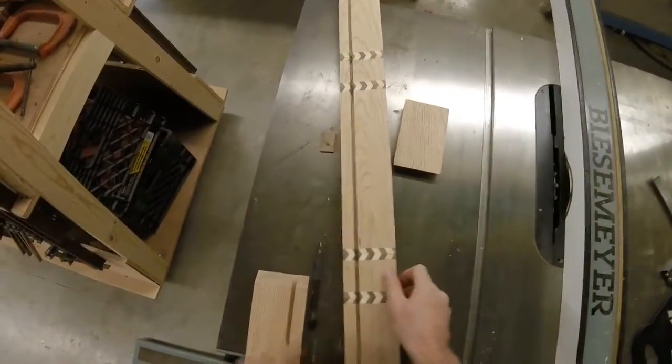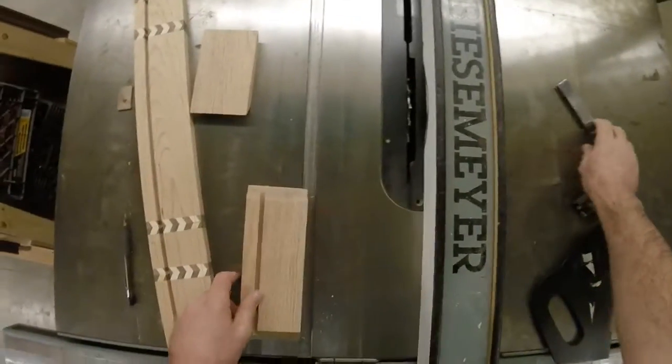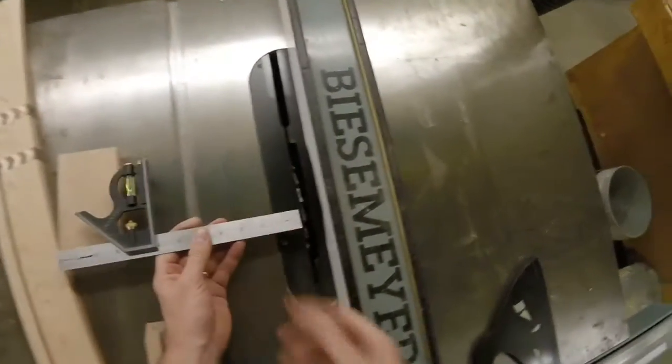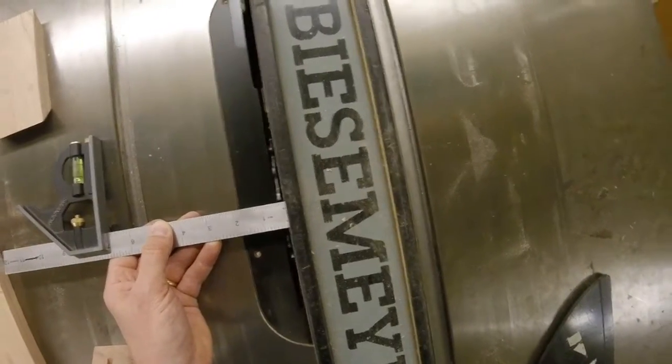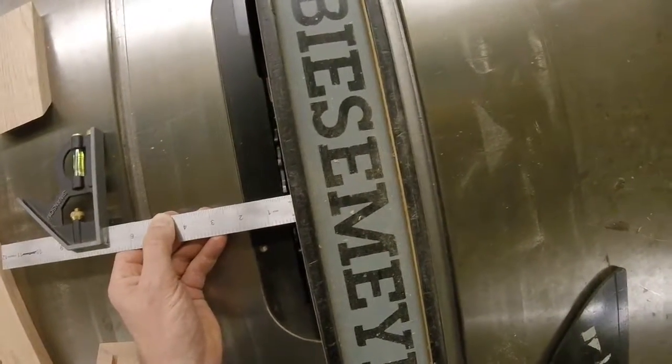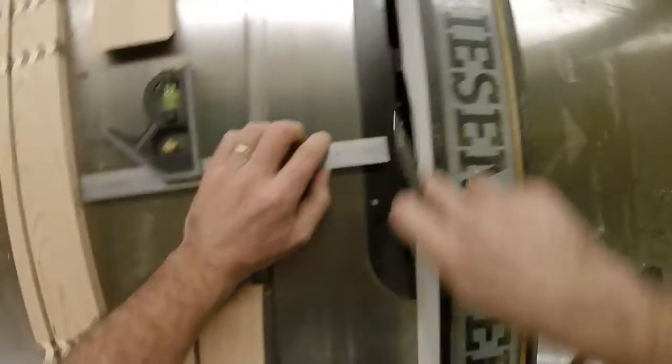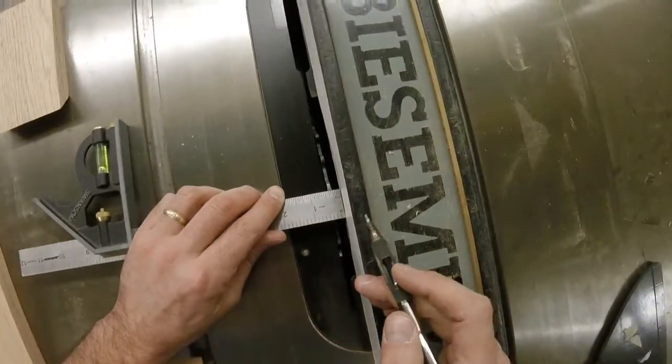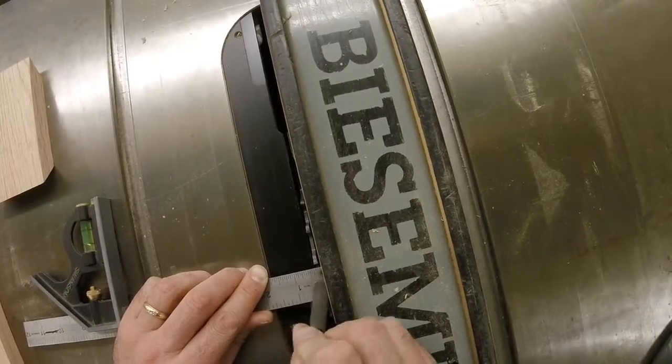Alright, now we need to do the rabbet where the top of the box is going to sit. So that's at 3 eighths of an inch to the outside. Reset our fence now. And this fence needs to be replaced. It's been hit a few times. Normally when we're machining close to the edge, we'll use a sacrificial board. Alright, looking straight down on that, at 3 eighths of an inch to the outside edge of the blade, we're going to remove this section of the board.